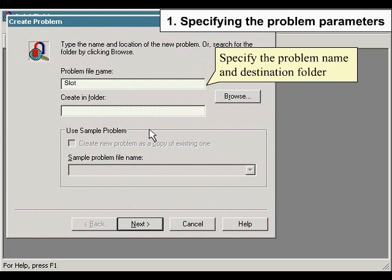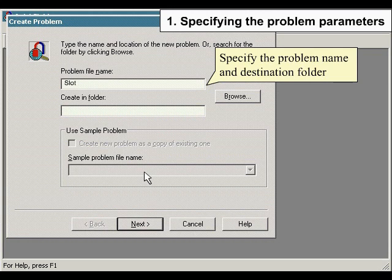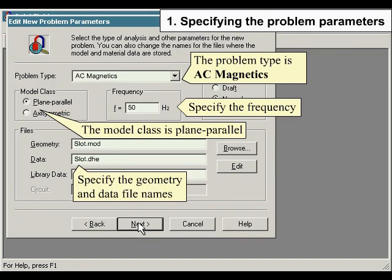Specify the problem name and destination folder. The problem type is AC Magnetics. The model class is Plane Parallel. Specify the frequency. Specify the geometry and data file names.